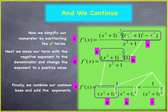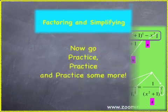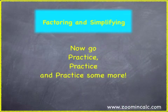Now, we have D and E in our denominator. The nice thing about D and E is they have a common base, x squared plus one, and when you multiply common base, you add exponents. So, in F, we have added those exponents. One-half plus one is one-and-a-half, or three-halves, and we now have the common base of x squared plus one. And that is our result. One over x squared plus one to the three-halves is our final answer. And that is factoring and simplifying. Now go practice, practice, and practice some more.